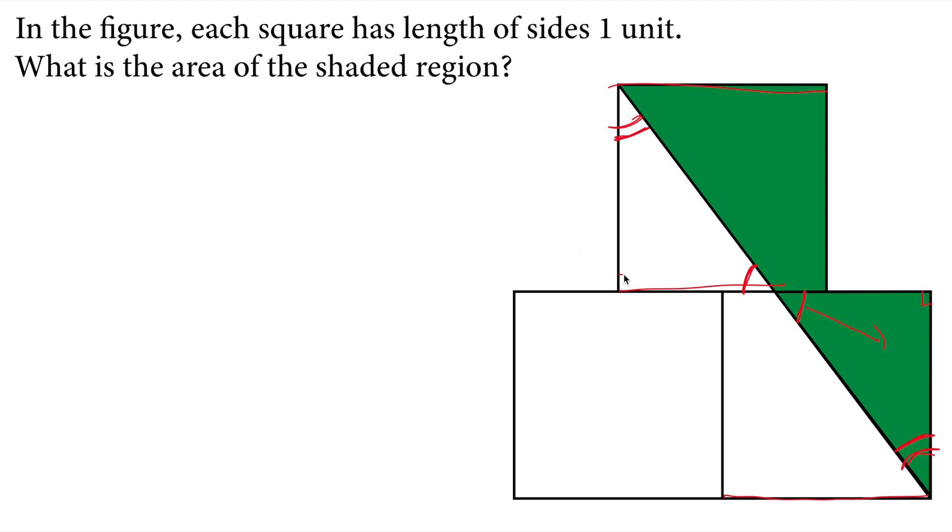These two angles are congruent angles. The corner angles here are also right angles. Therefore, these triangles are one to one ratio similar triangles, and that means they are congruent. So this triangle right here is congruent to this triangle.